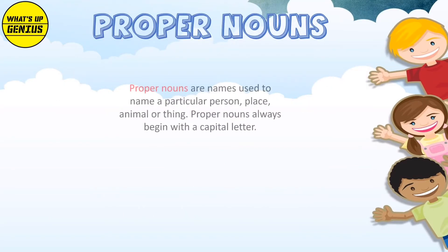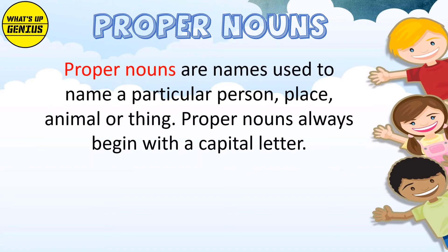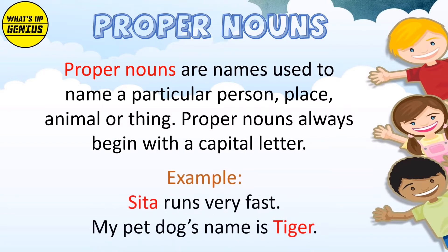Proper Nouns are the names used to name a particular person, place, animals or things. Proper Nouns always begin with a capital letter. Example: Sita runs very fast. My pet dog's name is Tiger.